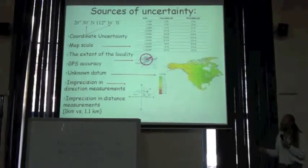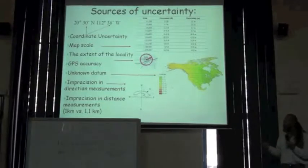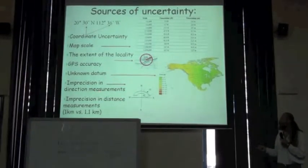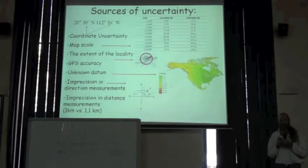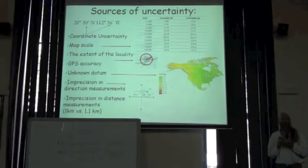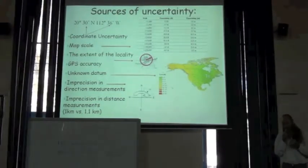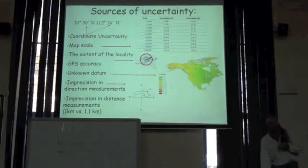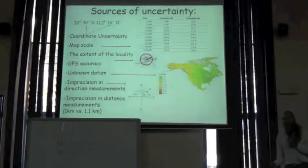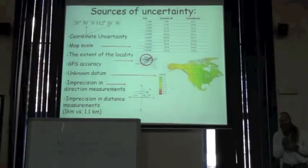We also have imprecisions that arise from particular kinds of locality descriptions — specifically, imprecisions in direction measurements. That is, we have a location described as 'north of Nairobi.' There's a contribution to the uncertainty from not knowing exactly what 'north' means in this context, and I'm going to draw this on the whiteboard.